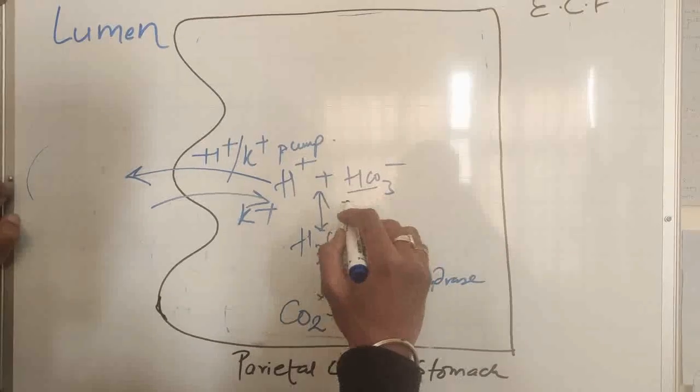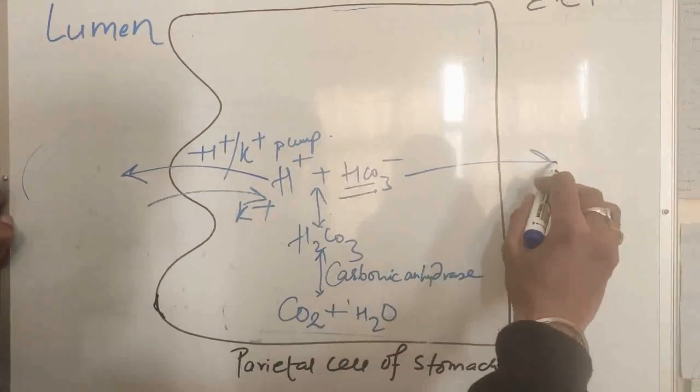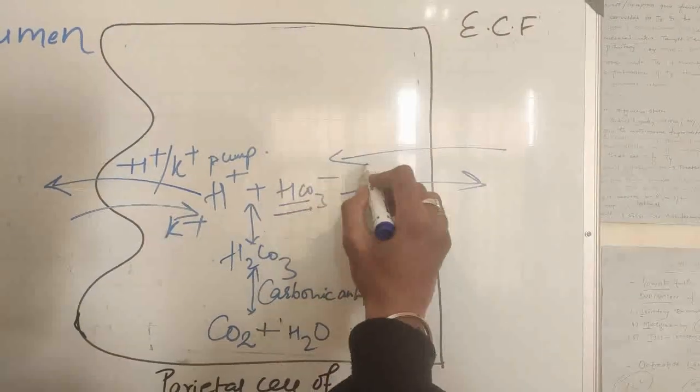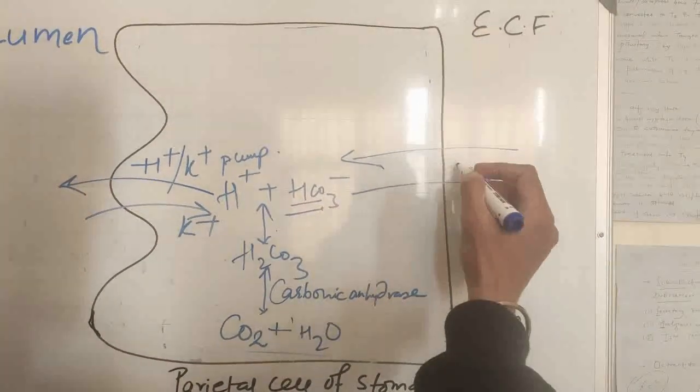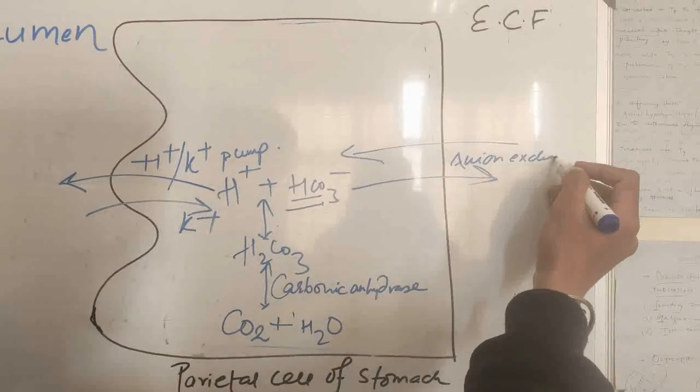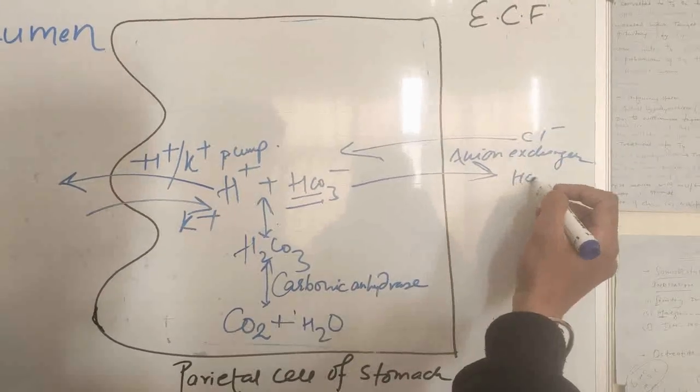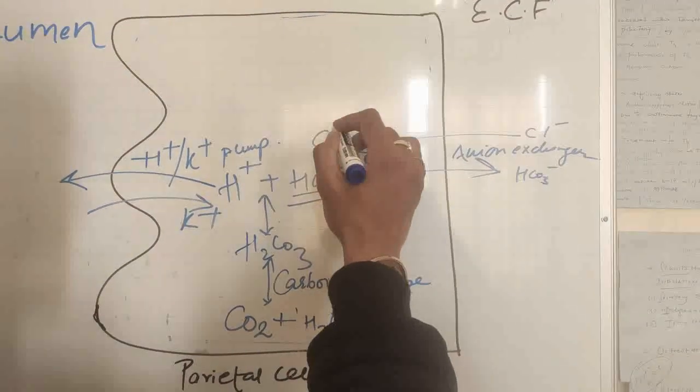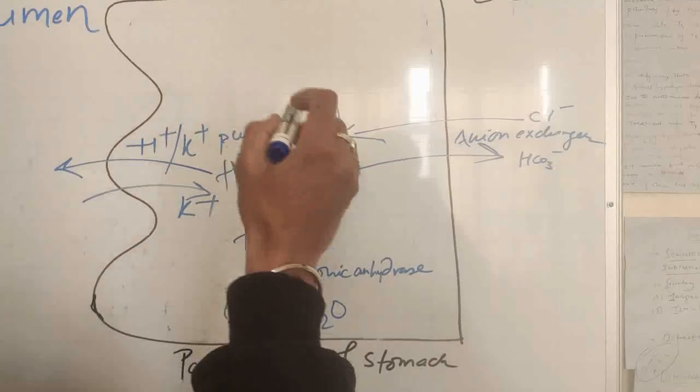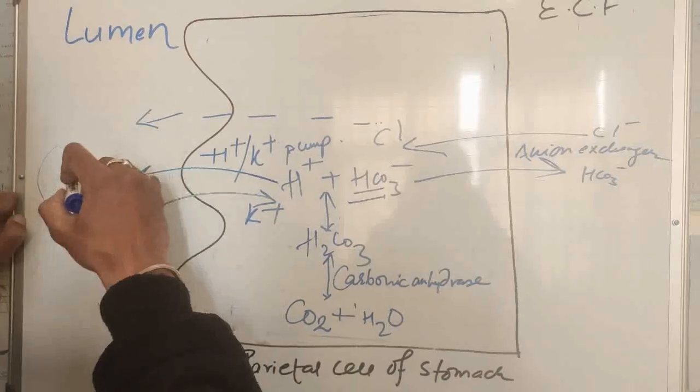Regarding this bicarbonate ion, it is exchanged with chloride in extracellular fluid via an ion exchanger. This chloride diffuses to the lumen of the stomach.